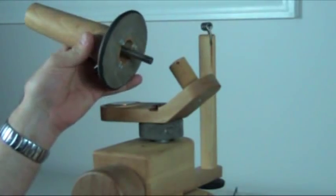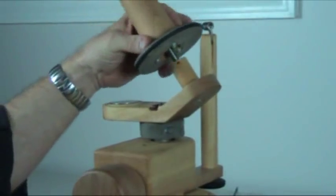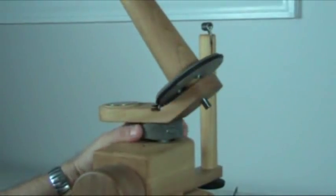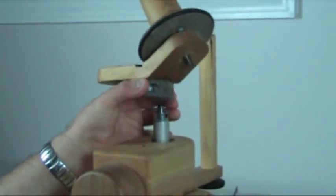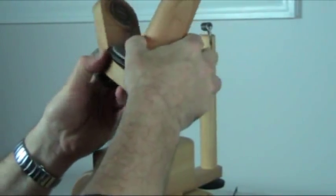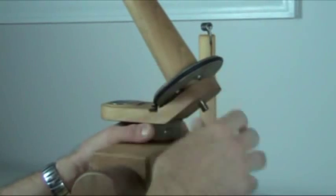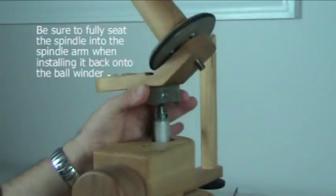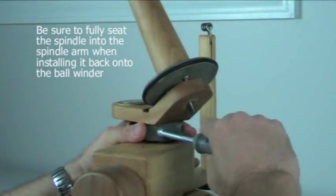When we ship each ball winder, we adjust the position of the arm and the spindle so that it fits on the conical shaft correctly. However, during transportation, during installation by the user, it can get out of position. So it's a good idea if you're setting it up for the first time to actually move this arm, and I'll show you that in a minute, and then reset it.